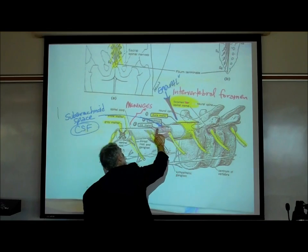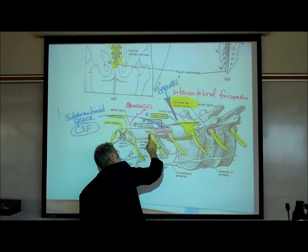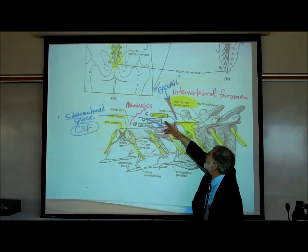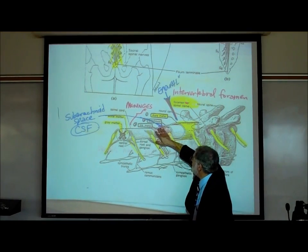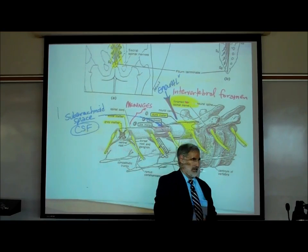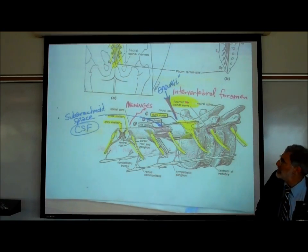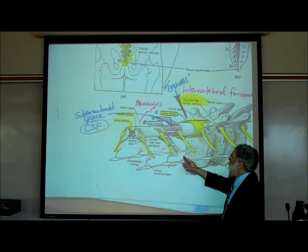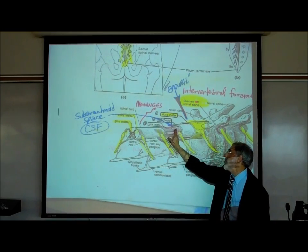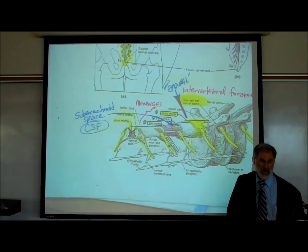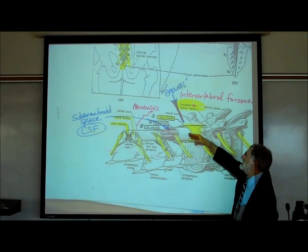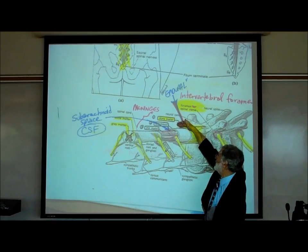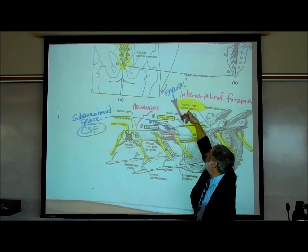There's an important space between the middle arachnoid membrane and the innermost pia mater, right underneath the arachnoid membrane, called the subarachnoid space. That subarachnoid space is filled with CSF — cerebrospinal fluid — so there's fluid circulating in this area. Another area to note is the space just outside the dura mater, which is called the epidural space.